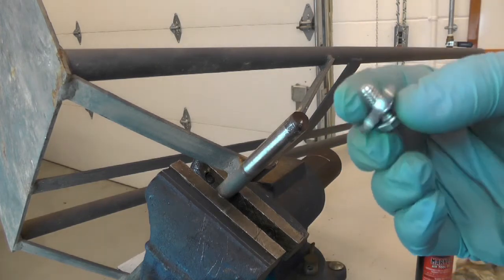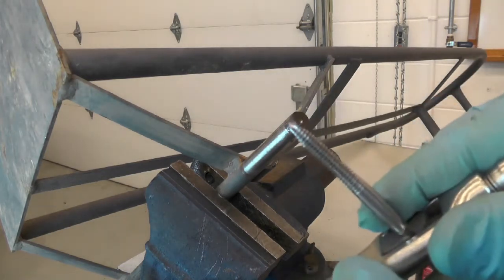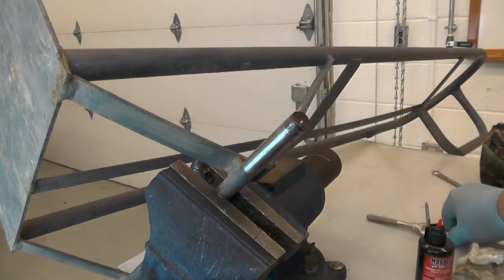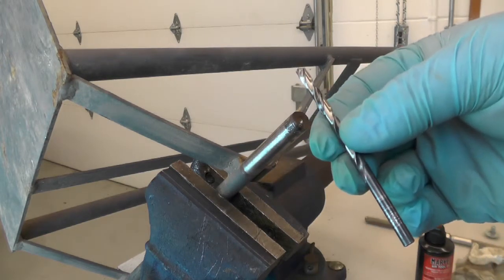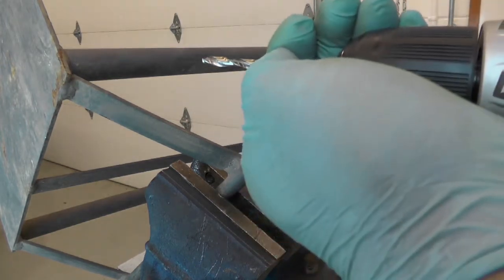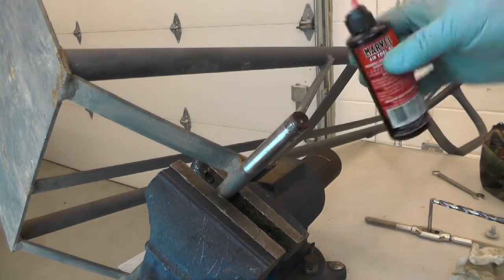Now, because I'm going to drill a hole for a 1/4-20 screw, I'm going to need to tap it out with a 1/4-20 tap. So in order to drill the correct hole size, I need to use a number seven drill bit. Remember, always use oil so you don't wear out your drill bits.